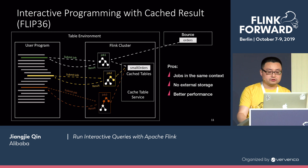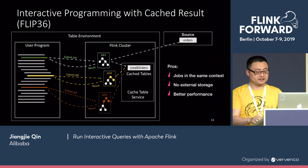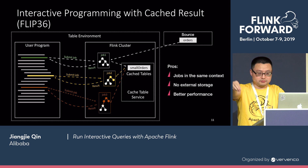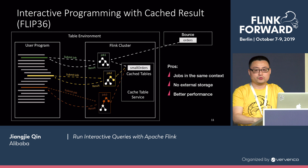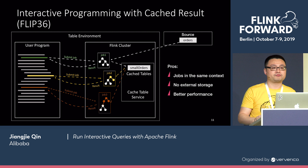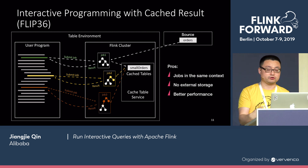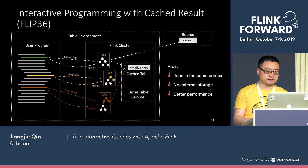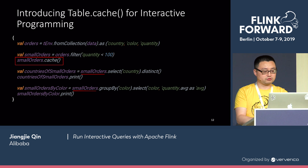In this case, all the jobs will be run in the same context. Everybody will have access to the intermediate result generated in previous jobs, as long as they're run in the same Flink cluster. We don't need any external storage anymore, and it typically would have better performance because we do not have external I/O — all the results are cached locally in the Flink cluster, probably saved on local disk.